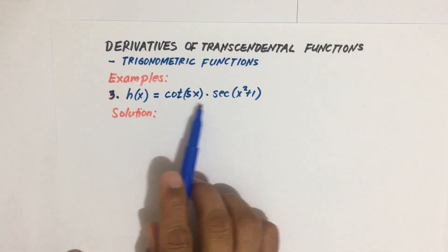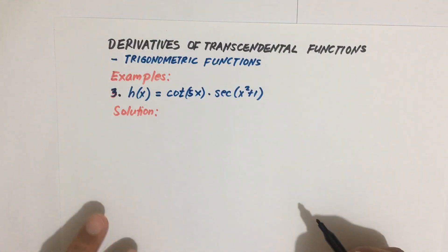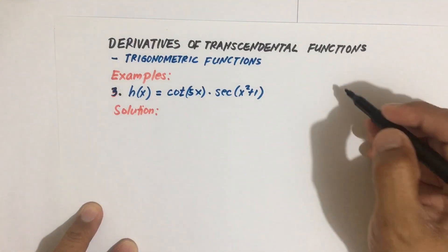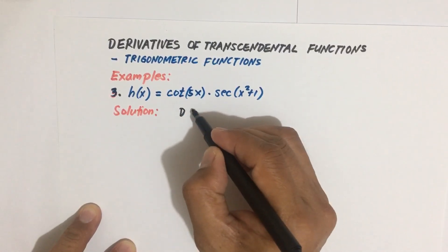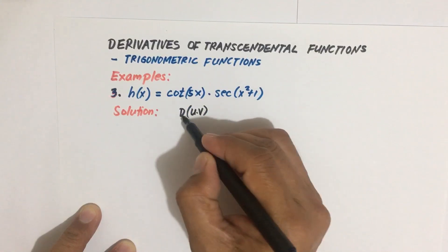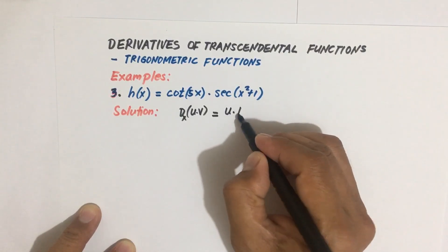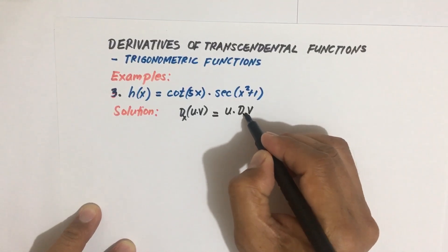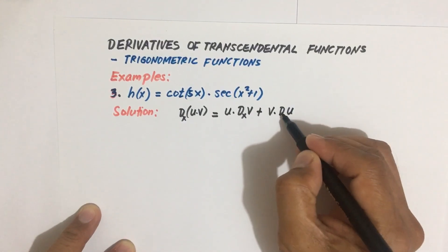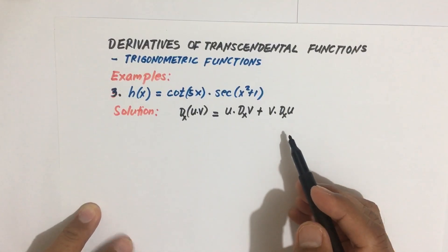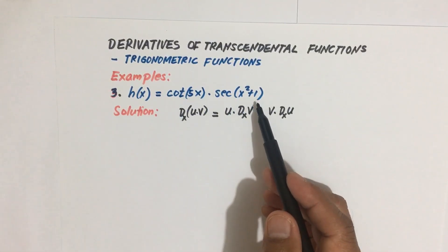If you look at the given, it is in the form of a product. Since it is in the form of a product, we will use the product rule in differentiation. The product rule states that the derivative of u times v with respect to x equals u times the derivative of v with respect to x, plus v times the derivative of u with respect to x.